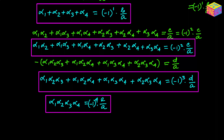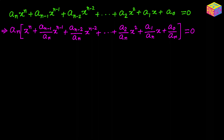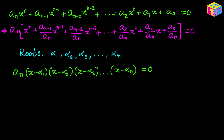Finally we are going to take a generic polynomial equation of degree n and try to establish the relationship between the coefficients and roots. Let's suppose this is our generic n-degree polynomial equation. If we take the leading coefficient out as a common factor, the equation can be rewritten. Now let's assume the n roots are alpha sub 1, alpha sub 2, alpha sub 3, up to alpha sub n — there will be n roots because the degree is n. Using the factor form we rewrite the equation with n such factors.